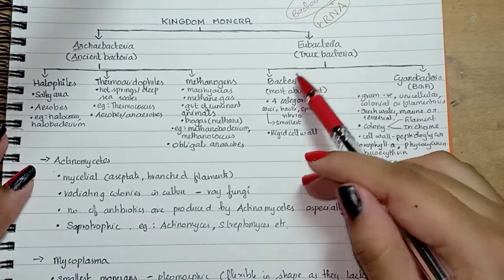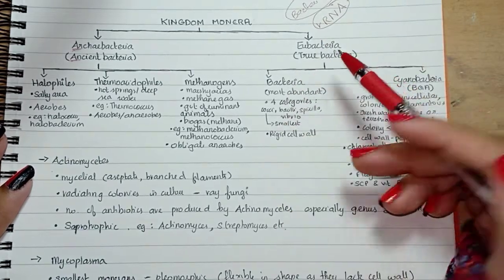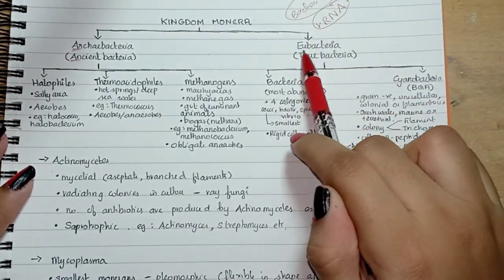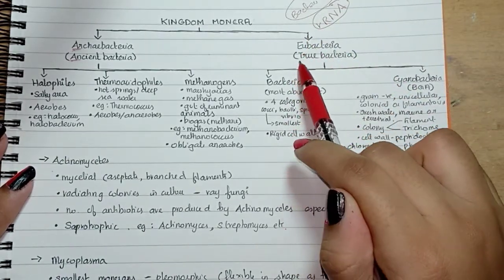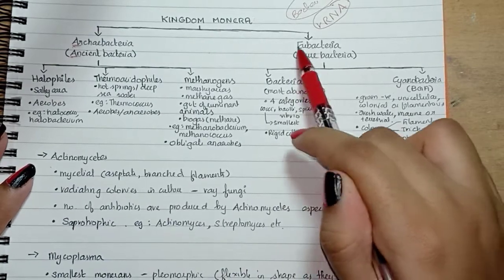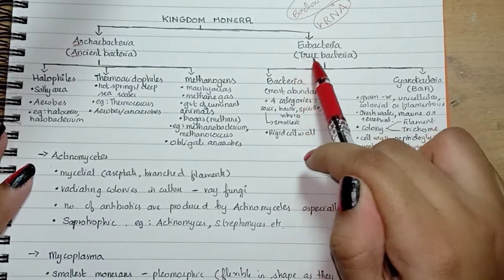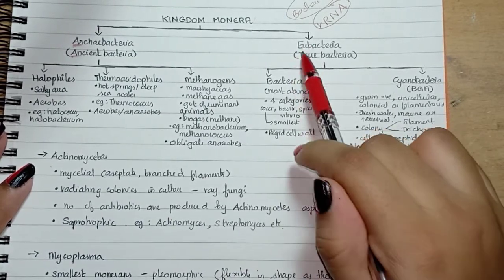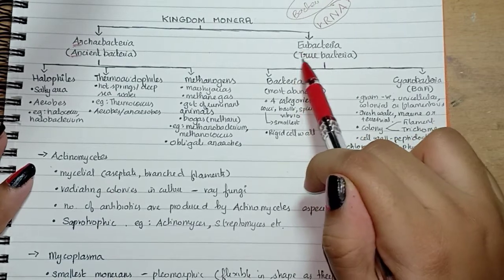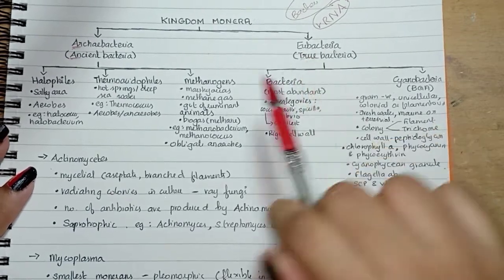And eubacteria — 'eu' means true — so eubacteria stands for true bacteria. These two rhyme: 'eu' means true.